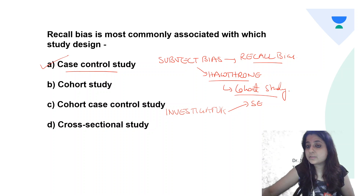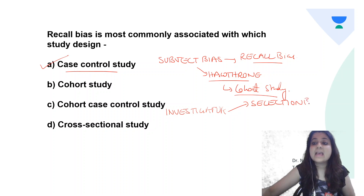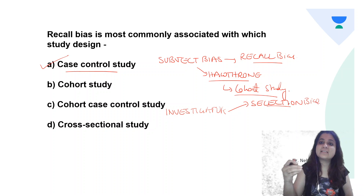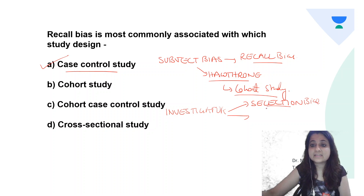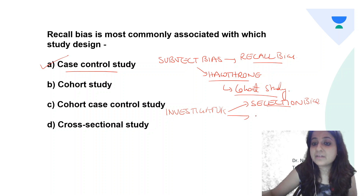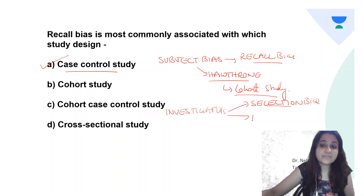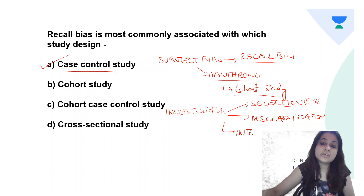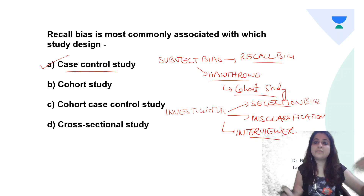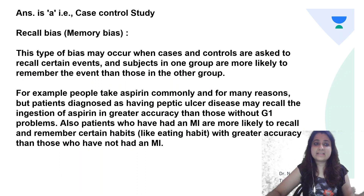Investigator bias is committed by the investigator and can be of different types. The most important investigator bias is selection bias — as a researcher, I select my cases in such a way that gives me the results I want. Another very important investigator bias is misclassification bias, where the investigator wrongly classifies the exposed into the non-exposed group. There is also interviewer bias, where the investigator spends more time interviewing cases than controls.